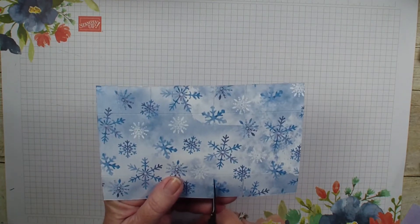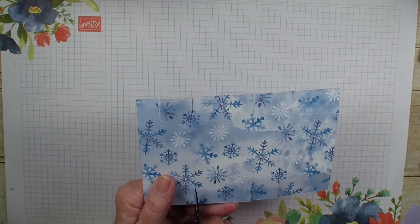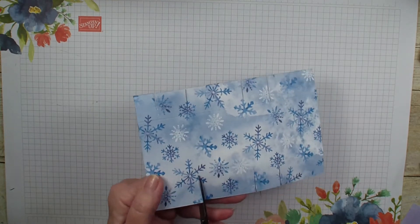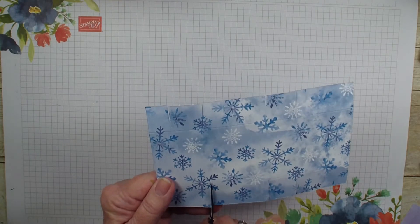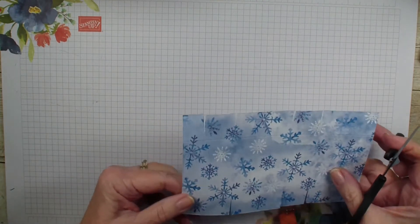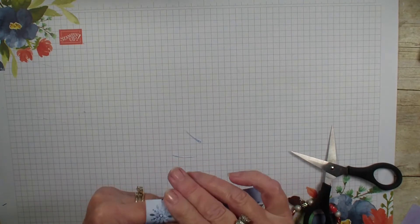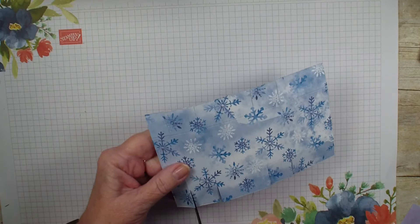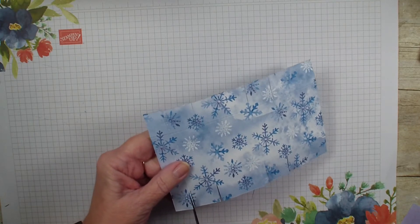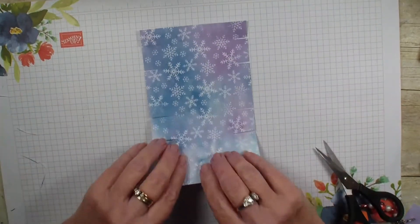We're just going to pull out that little sliver of paper and you can see, it just gives us a little gap so when you fold it together, you won't have that bulkiness at the seam. Today is kind of a cloudy day in Ohio, makes it hard even though I have my lights on to see the score lines.